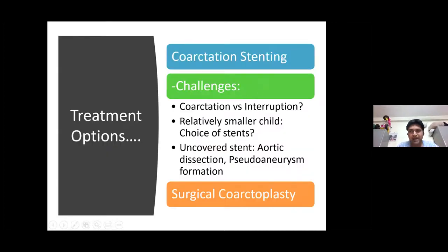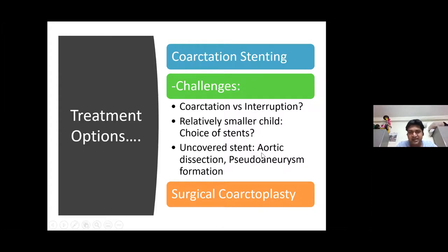So what was the plan? It was coarctation stenting. But what are the challenges? Whether it was a coarctation or interruption — that was a big controversy, though the CT scan showed a very tiny continuation, probably a tight coarctation. Then there is the relatively small child. Selecting the proper stent was really challenging. For a bigger child — say 25 or 30 kg — the choice of stents is very obvious, like a covered stent such as CP or Andra. But for a small child, putting a covered stent requires a very large sheath, which is very difficult. If we put an uncovered stent, there is a chance of aortic dissection since it is near interruption, as well as pseudoaneurysm formation. Surgery — coarctation repair — was another option, but considering all the co-morbidities, this child is not a good candidate for surgery either.